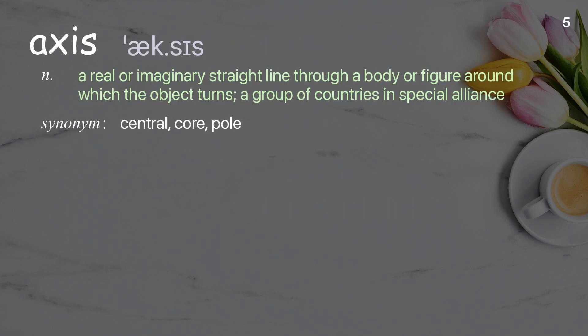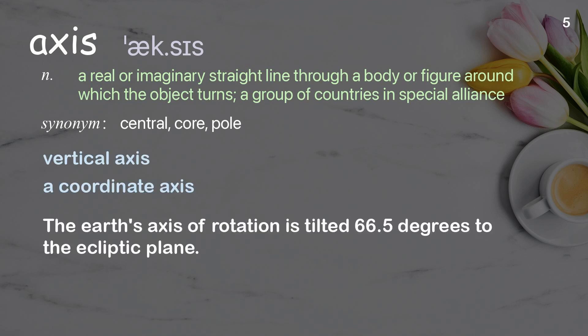Axis: a real or imaginary straight line through a body or figure around which the object turns; a group of countries in special alliance. Example: the earth's axis of rotation is tilted 66.5 degrees to the ecliptic plane.